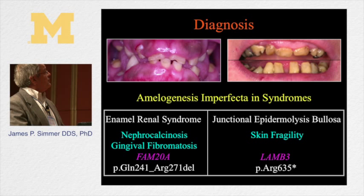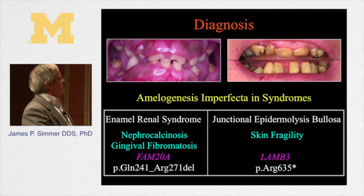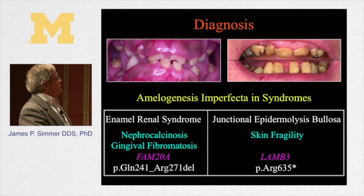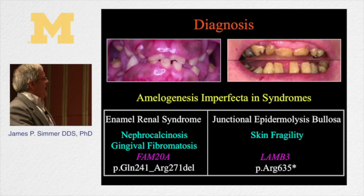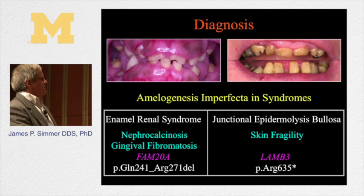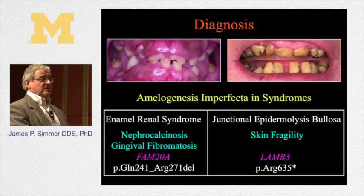The two top conditions from the previous slide are shown here. This is a condition known as enamel renal syndrome. This person has dental defects where there's extreme enamel agenesis or hypoplasia, failure for some teeth to erupt, and gingival fibromatosis. We know this condition is caused by mutations in a gene called FAM20A, family 20 member A. A particular glutamine at position 241 was changed to an arginine, or deleted all the way through arginine 271. This person also has nephrocalcinosis — their kidneys have started to calcify.